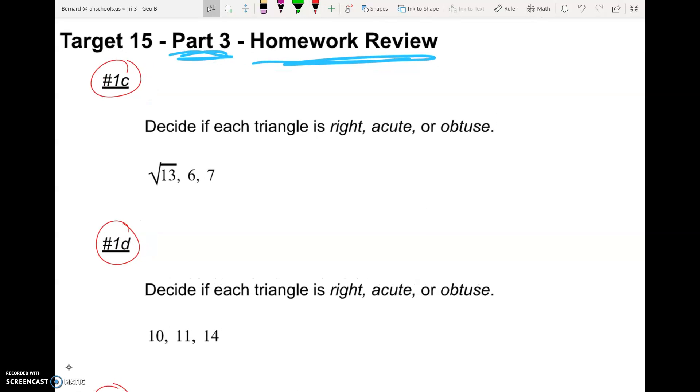The key here is we need to know which number is going to be C in our Pythagorean theorem equation. That's always going to be the biggest number. We need to know what the square root of 13 is. Looks like the square root of 13 is roughly 3.6. So 7 is the biggest. So 7 is C. Let's square 7 by itself, and let's square the other two separately and add them together. So 7 squared, and we'll see how that compares to the square root of 13 squared plus 6 squared.